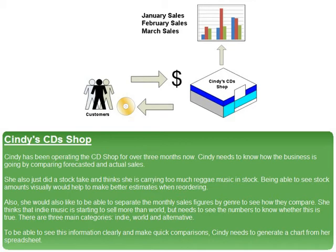Being able to see stock amounts visually would help to make better estimates when reordering. She would also like to be able to separate the monthly sales figures by genre to see how they compare. She thinks that indie music is starting to sell more than world, but needs to see the numbers to know whether this is true.